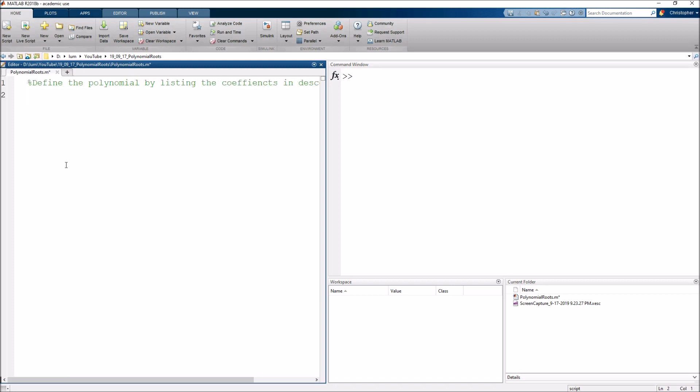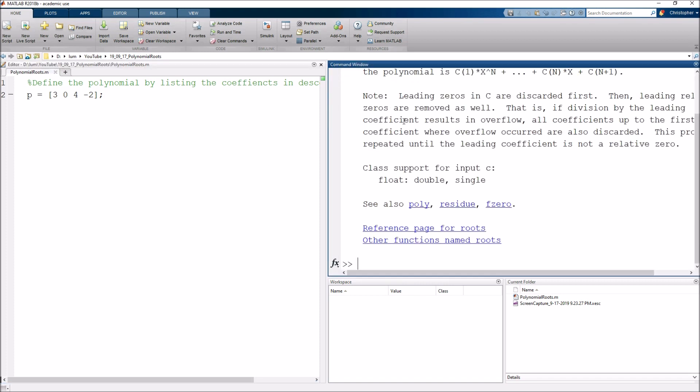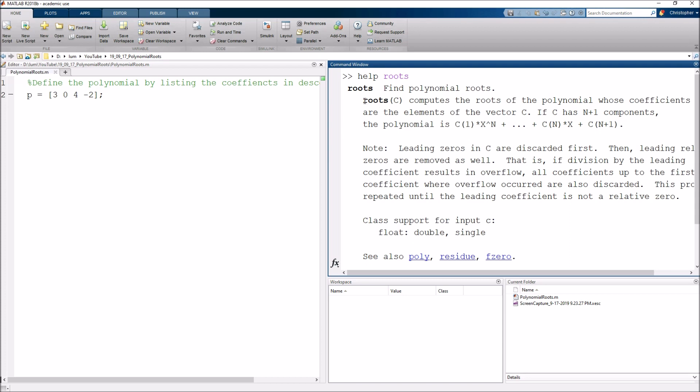So let's go ahead and say P is [3 0 4 -2]. And now what we can do is we can go ahead and use the roots function, so if I just come over here and say help roots, we see that this is exactly what we want.